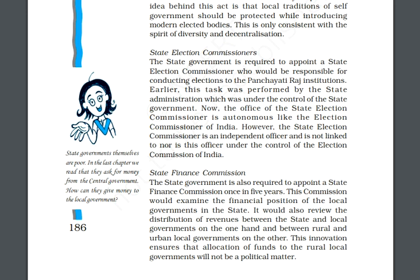The state finance commission will also ensure that the allocation of funds to rural and local governments is not made a political matter and that there is an equal distribution of resources — ensuring that funds do not go disproportionately to politically favored areas. This is all with the 73rd amendment.